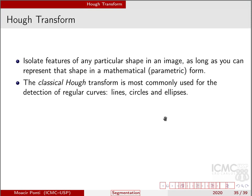The second method I'm going to mention is the Hough Transform. It isolates features of any particular shape in an image as long as we can write that in a parametric form. The classical Hough Transform is commonly used to detect regular curves, such as lines, circles, and ellipses.